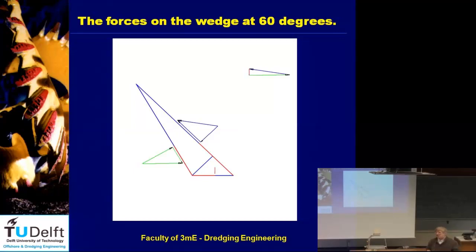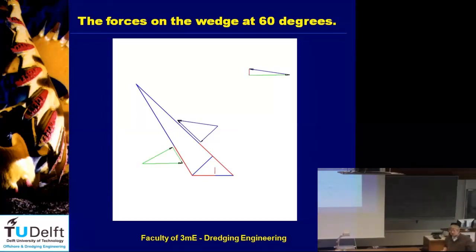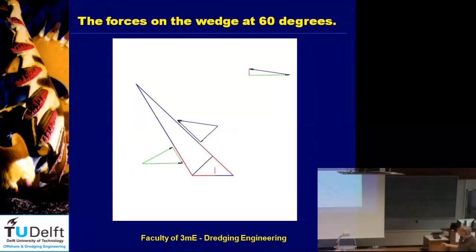That's also important to know: if this is a static wedge, it means friction is not 100% mobilized. If it would move, then I have 100% friction; if it doesn't move, it could also be zero percent. I made some pictures of the forces on a wedge for different blade angles. This one is about 75 or 60 degrees — you can see a tiny wedge in front. The blade generates a downward friction force, meaning the sand on the blade has an upward friction force.